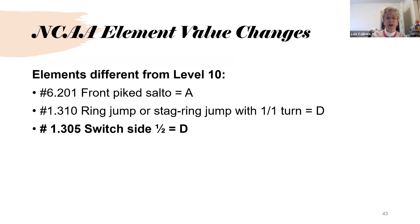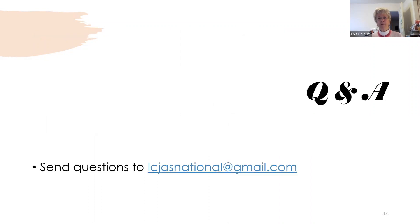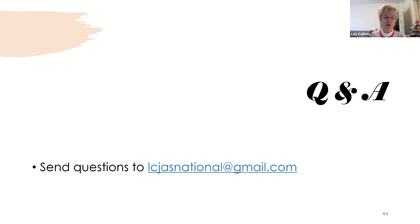For connective value — USAG rules applied to college — indirect acro connections of two or more saltos or aerials without hand support: B plus C gets one-tenth bonus; C plus C was changed for age group to two-tenths but was already in college rules; A plus D was changed to two-tenths; A plus E was changed to two-tenths; B plus D or E changed to two-tenths; C plus D or E or more difficult changed to two-tenths. Elements different from Level 10: the front pike salto is an A; the ring jump or straddle jump with a full turn is a D; and added this year — 1305 — switch side half is a D. If you have questions, my email address is listed. Good luck this season.